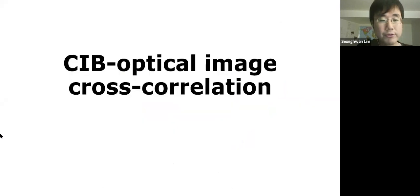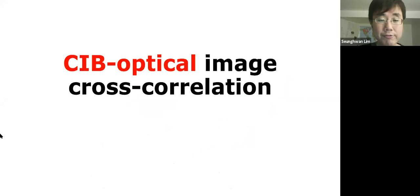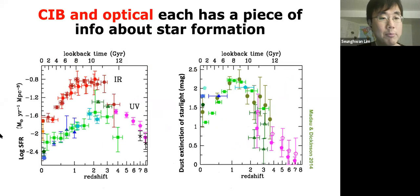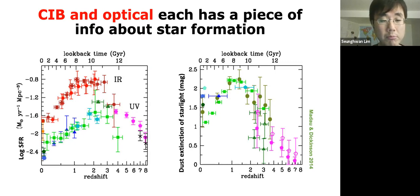Now let me get into what I'm currently working on. I'll dissect each part of this project title to demonstrate why this is an inevitable thing to study. First, why CIB and optical? The cosmic infrared background (CIB) is the relic of UV or optical starlight absorbed by dust and re-radiated in the infrared or sub-millimeter band. As shown in the plot on the left, the CIB actually contains more original starlight than the unobscured starlight in the UV band. So the CIB contains a large amount of information about the star formation history of the universe, particularly when galaxies were most actively forming stars.